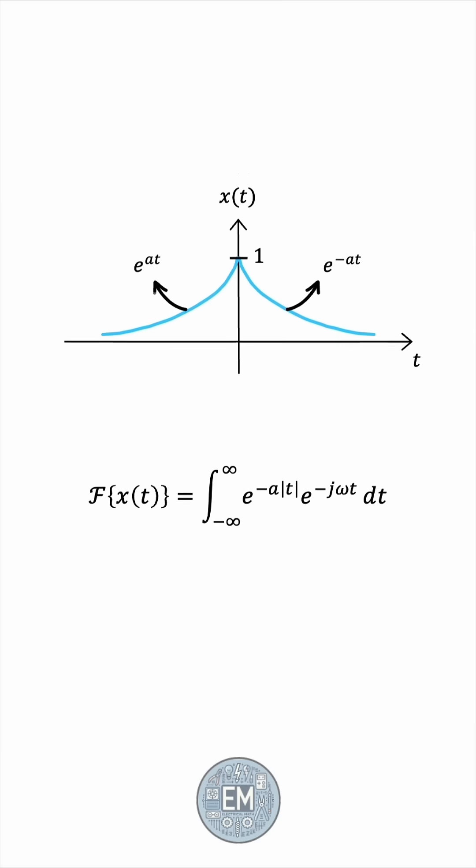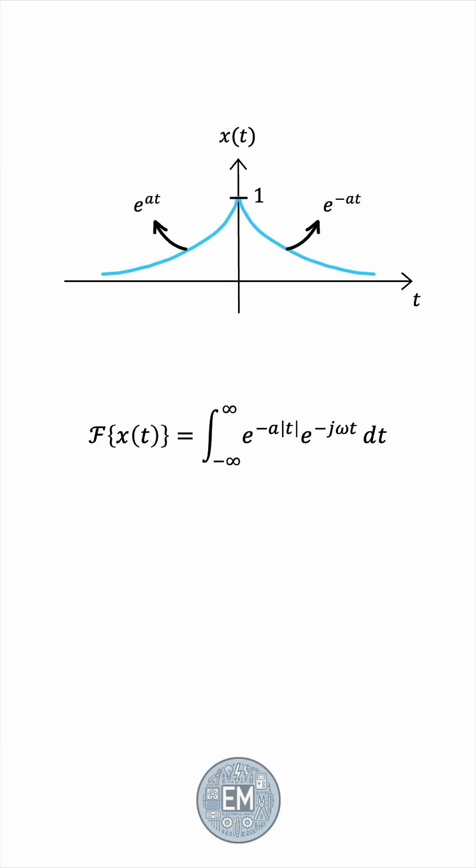So we're going to have to split the integral into two pieces. And then, using laws of indices, we can simplify the integrands into a single exponential function in each case. We have e to the power of a t minus j omega t for the first integral, and the second one is the same thing, but with a negative sign in front of the a. And now, we'll factor out a t in each case.